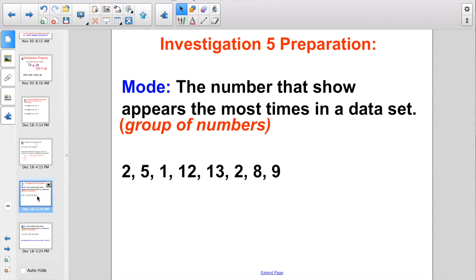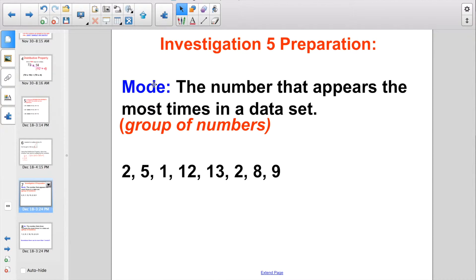So that was the review. On to our Investigation 5 preparation. Today we're all about organizing and displaying data. And what data is, is a fancy name just for a group of numbers. And there's three different terms that I want us to be ready for, because we're going to be working with these terms a lot these next upcoming months. And the first one is mode. The definition of mode is the number that appears the most times in a data set. The number that shows up the most when you have a group of numbers.